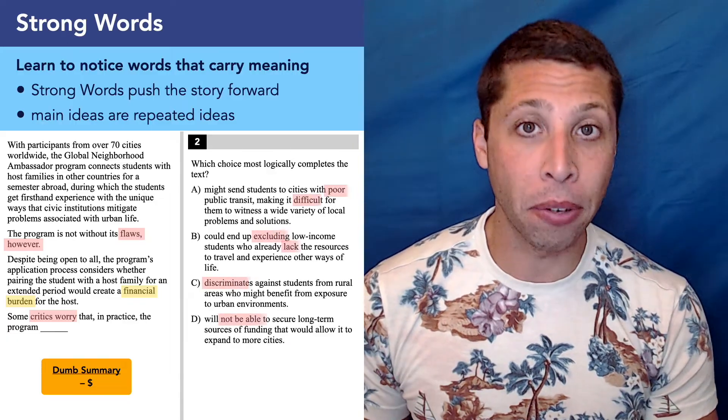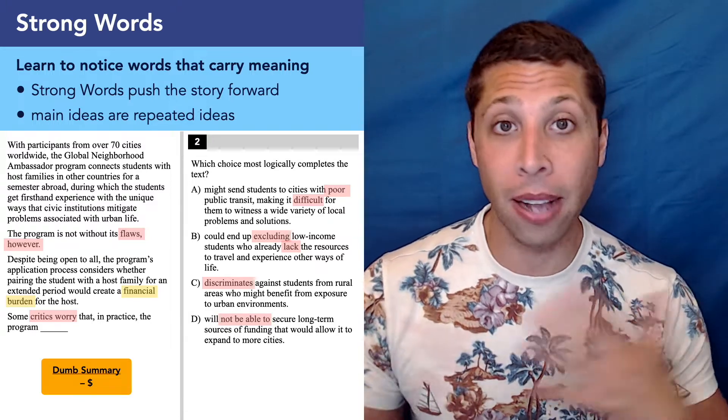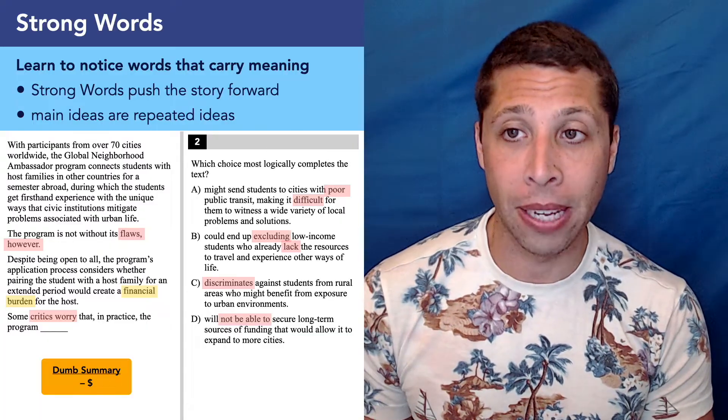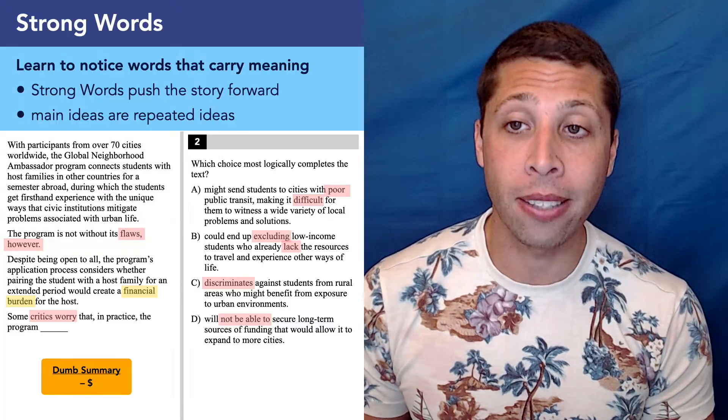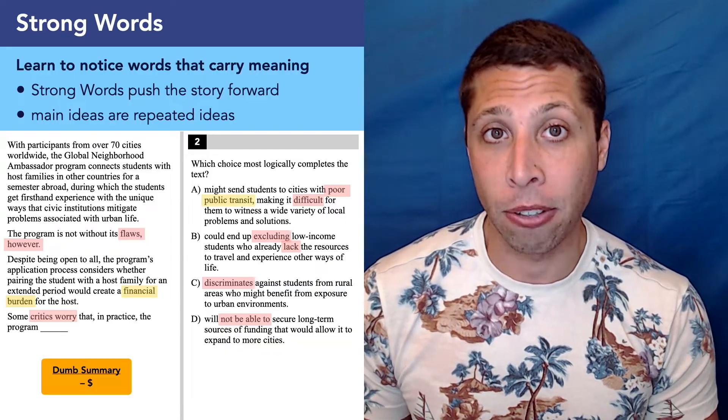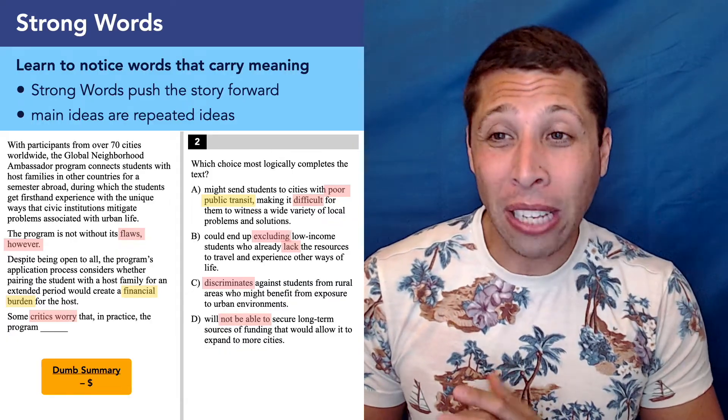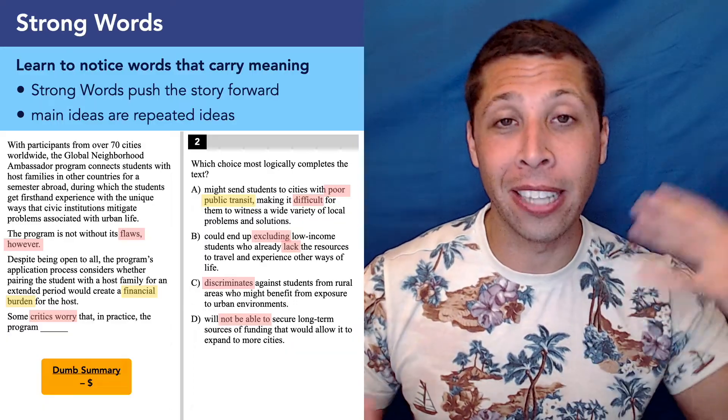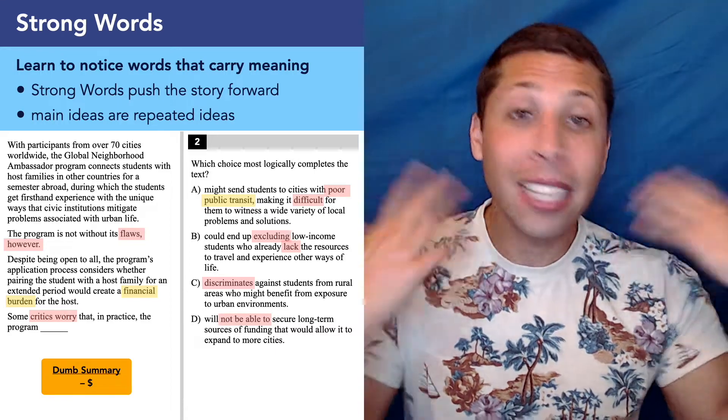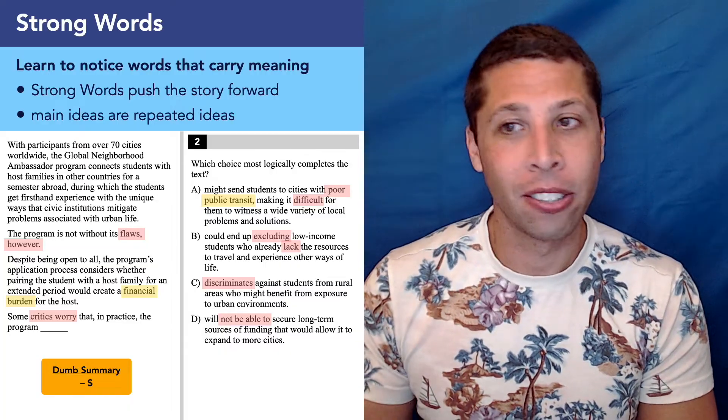We're going to be able to find the negative stuff pretty easily. So that in this case is not really helpful. We're going to need more. So let's think about the money stuff as we sort through the other pieces. Choice A, the program might send students to cities with poor public transit, making it difficult for them to witness a wide variety of local problems and solutions. Well, public transit stands out to me. That's strong. Because that's a very specific idea. Now, do they talk about that idea in the passage? No, I don't think so. I could invent some story about like if you have a financial burden, then you don't have the money for a car. But that's me telling a story. The story needs to tell the story. And it doesn't talk about public transit here. So this is not going to be a good answer.